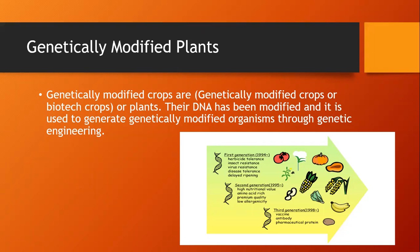The second generation was occurring in 1995, which features high nutritional value, amino acid rich content, premium quality, and low allergenicity. The third generation was occurring in 1998, which was very important in human life, like the production of vaccines, antibodies, and pharmaceutical proteins.